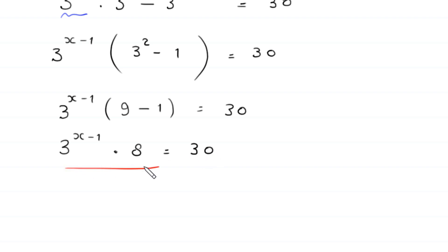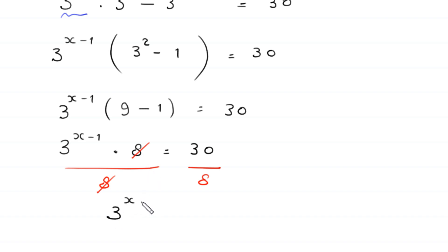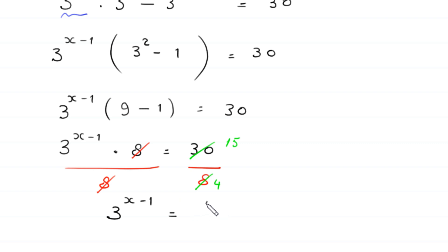So here we divide both sides of this equation by 8. This 8 will be cancelled, and on the left hand side we are left with 3 to the power x minus 1 is equal to 30 over 8. This simplifies — dividing numerator and denominator by 2 — to 15 over 4.